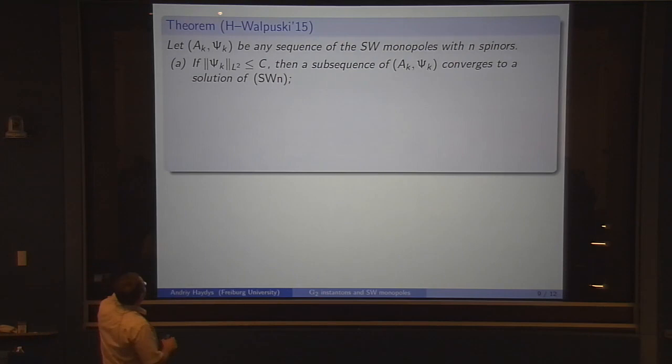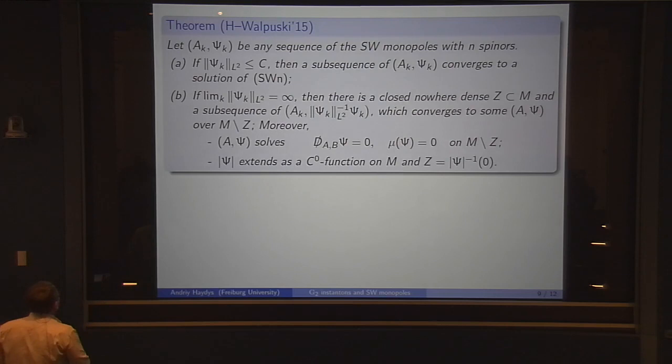If N is 1, this is precisely the Seiberg-Witten story. But in this case, the interesting case is when N is at least 2. A and B play a somewhat different role: B is a parameter, whereas A is a variable in the equations. The theorem we proved with Thomas is the following: suppose we have any sequence of solutions. Then there are two cases. First, you look at the sequence of L^2 norms of the spinor, and this is bounded. The claim is that there is a subsequence which converges to a solution of the same equations. That would be a compactness statement for the moduli space.